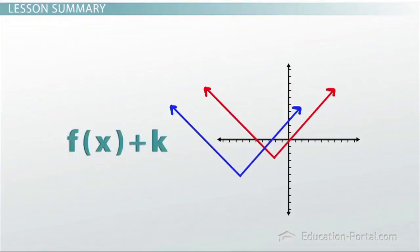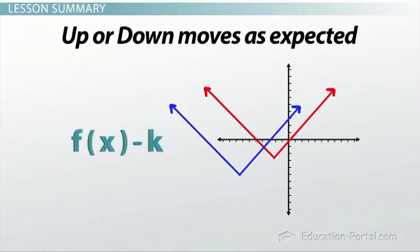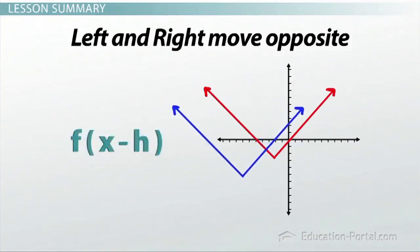Shifting the graph up or down follows the pattern you might guess, with adding shifting it up and subtracting shifting it down. But shifting it left or right is the opposite. Adding shifts it left, while subtracting shifts it right.